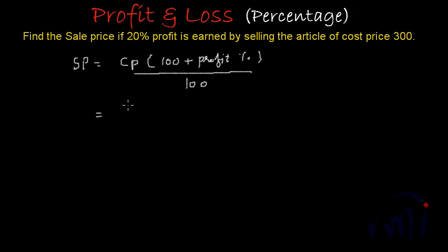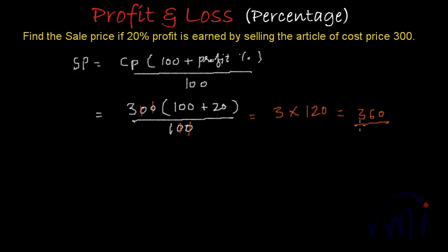In this case, sale price will be cost price is 300, inside the bracket we will have 100 plus profit percent which is 20 divided by 100. These two zeros will cancel these two zeros and this will be equal to 3 multiplied by 100 plus 20 is 120. So this will be equal to 12, 3 times 12 is 36 and 1 is 0. So sale price over here will be 360.